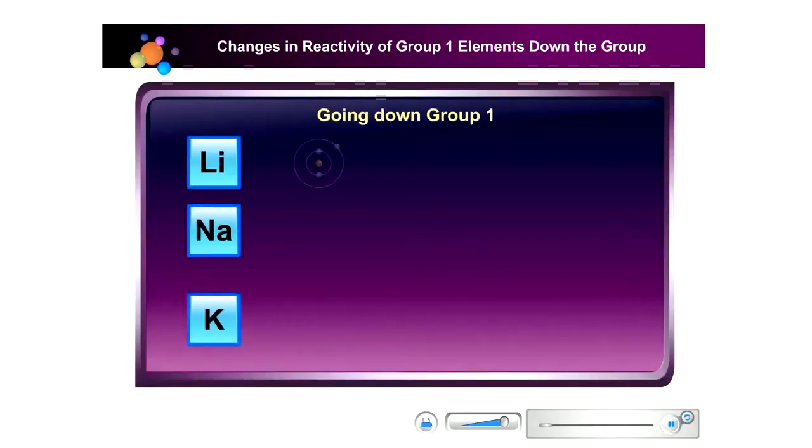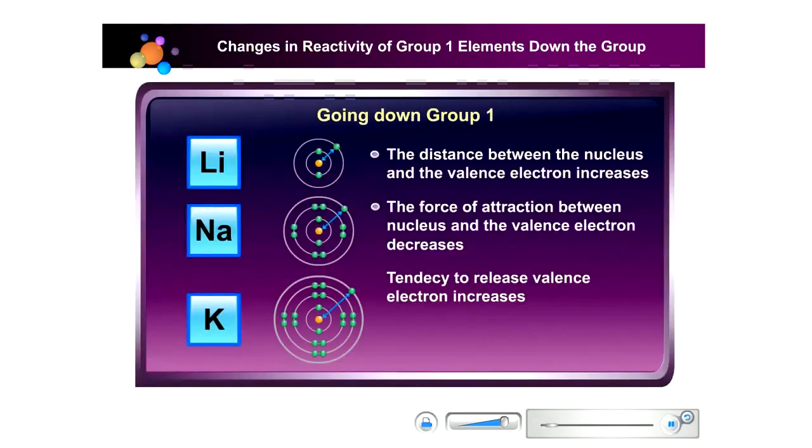As we go down the group, the valence electron is further from the nucleus. Moreover, the valence electron is also shielded by the inner negatively charged electrons. Going down group 1, the distance between the nucleus and the valence electron increases. The force of attraction between the nucleus and the valence electron decreases. Tendency to release valence electron increases. Reactivity increases.